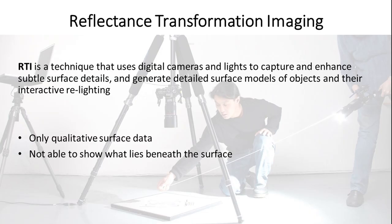You should note, however, that RTI does not produce quantitative metric data. For metric information, you can use other methods covered in this course such as laser scanning and photogrammetry. Also, RTI does not enable users to see beneath the surface. In such instances, multispectral imaging techniques such as infrared photography, also covered in this course, may provide the desired information.